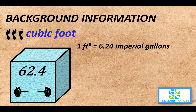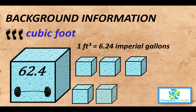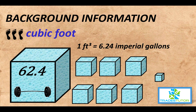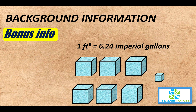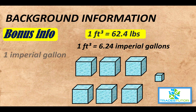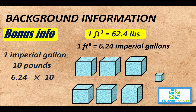One cubic foot has 6.24 imperial gallons. So if we took a container that was exactly one imperial gallon, we'd get 6.24 of them out of that full cubic foot. Here's some bonus info: a cubic foot of water is 62.4 pounds. One imperial gallon weighs 10 pounds, and we pulled 6.24 imperial gallons from that cubic foot — 6.24 times 10 equals 62.4 pounds. It all checks out. There are your imperial gallons.